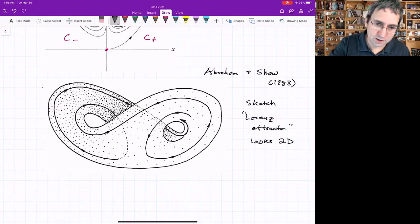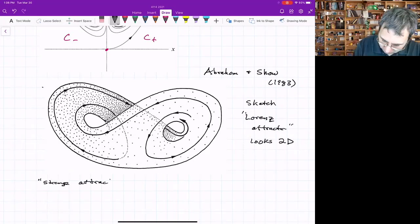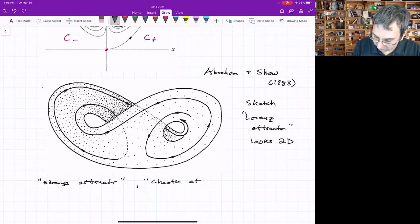We call it a strange attractor or a chaotic attractor, an infinite complex of surfaces. It shows something called sensitive dependence on initial conditions.